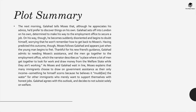The next morning, Galahad tells Moses that although he appreciates his advice, he prefers to discover things on his own. He sets off into London, determined to reach the employment office to secure a job. However, he becomes suddenly disoriented and begins to doubt himself, worrying he won't remember how to get back to Moses' place. Having predicted this, Moses follows Galahad and appears just when the young man begins to fret. Thankful for his new friend's guidance, Galahad admits to needing help and the men go together to the employment office — described as a place where a lot of men get together to look for work and draw money from the welfare state. Moses explains that many immigrants choose to draw on government assistance as their only income, something he scorns because he believes it muddies the water for other immigrants who merely want to support themselves with honest jobs. Galahad agrees and decides not to subsist solely on welfare.